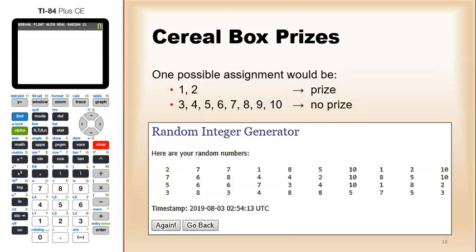One possible assignment would be, let's say the numbers one and two would be prize, and then numbers three, four, five, six, seven, eight, nine, 10, the other 80% be no prize.